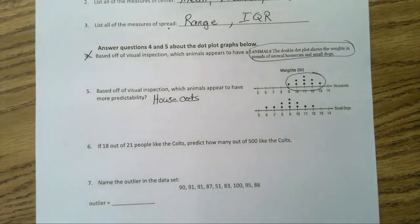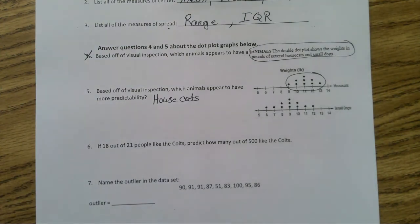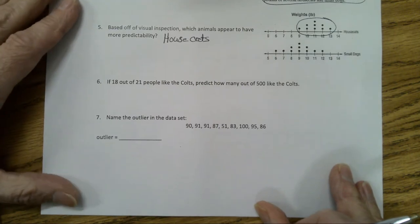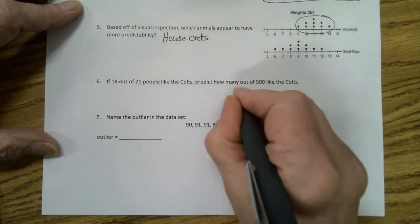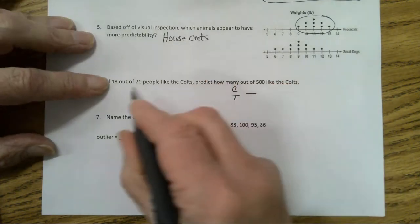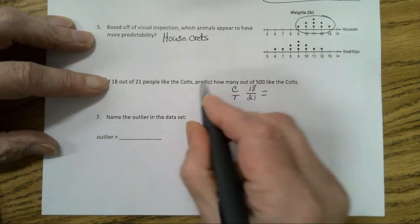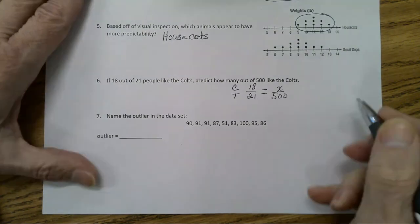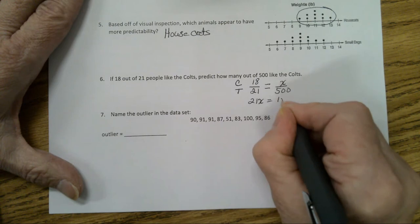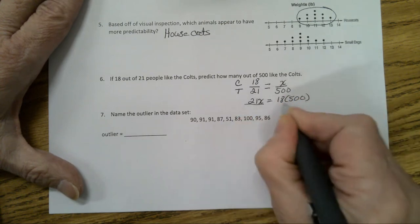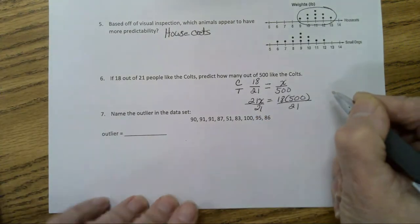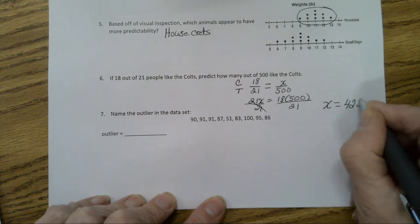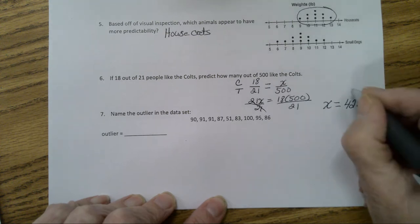And number six. If 18 out of 21 people like the Colts, predict how many out of 500 like the Colts. So we're going to set it up as a proportion. We're going to do Colts over total. So 18 out of 21 like the Colts. Predict how many out of 500 would like the Colts. Now we will use cross products and divide. So we're going to have 21 times x equals 18 times 500. Yes, you will be allowed to use a calculator on your test. Divide both sides by 21, and you are going to end up with x having the value of 428.6. If you round it to the nearest whole number, it would be 429.